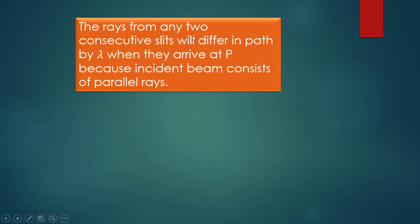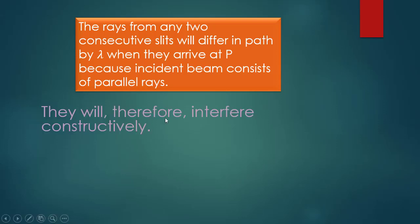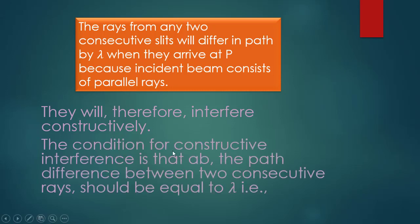The rays from any two consecutive slits will differ in path by wavelength lambda when they arrive at P. The condition for constructive interference is that AB — the path difference between two consecutive rays — should be equal to one wavelength lambda. That is, AB equals lambda.